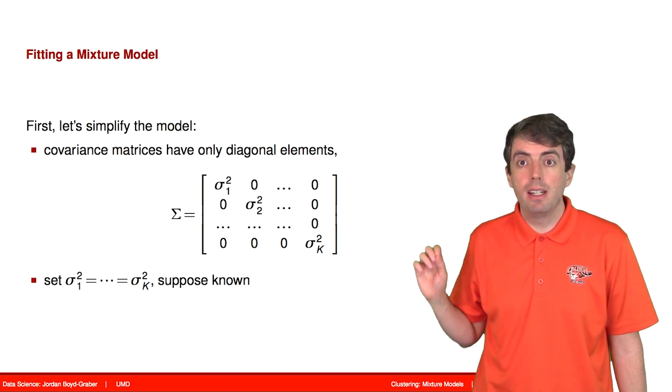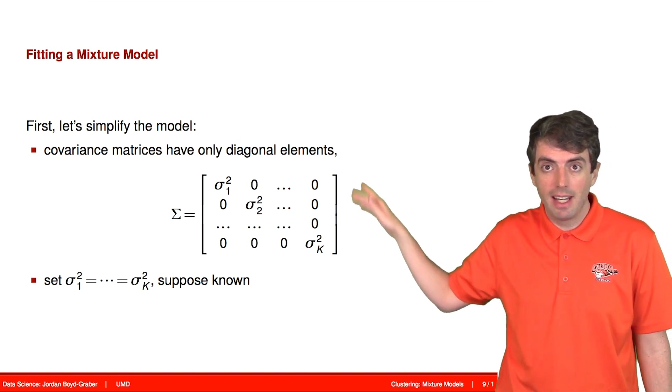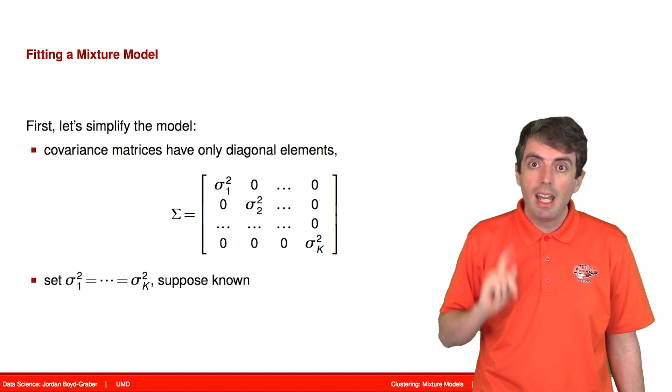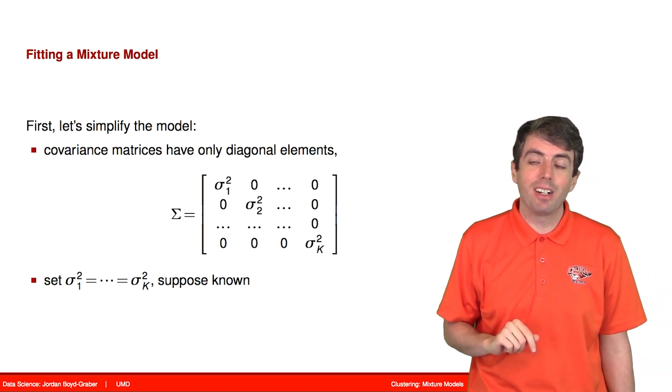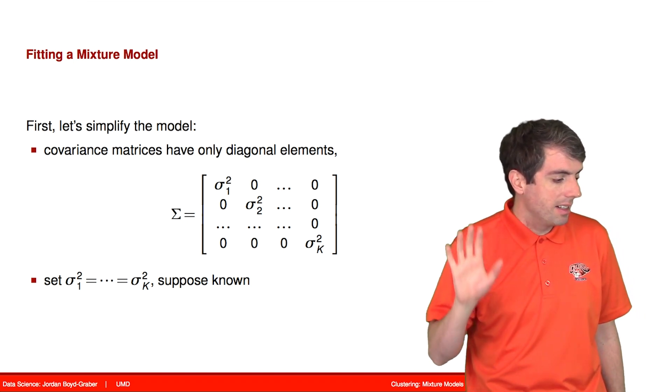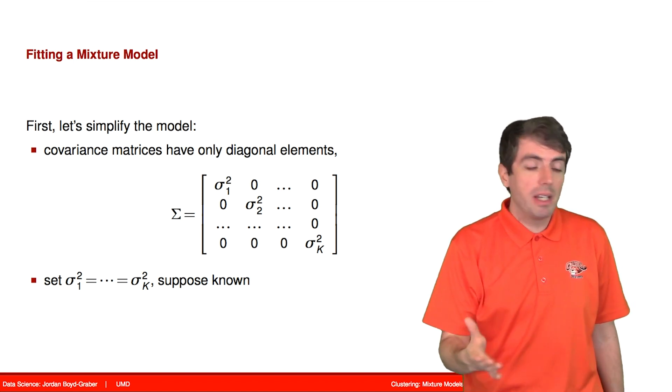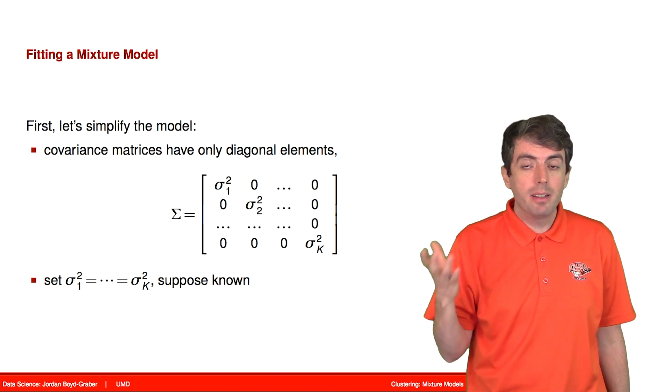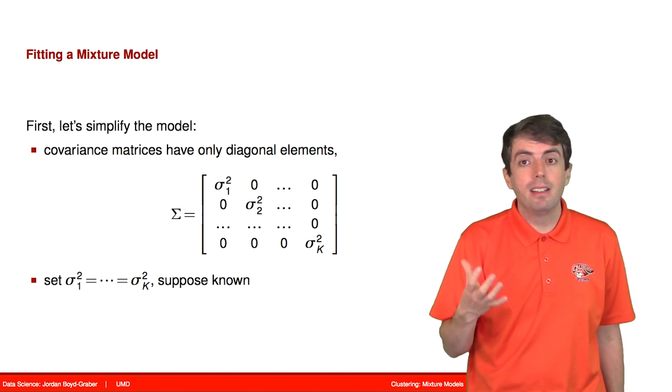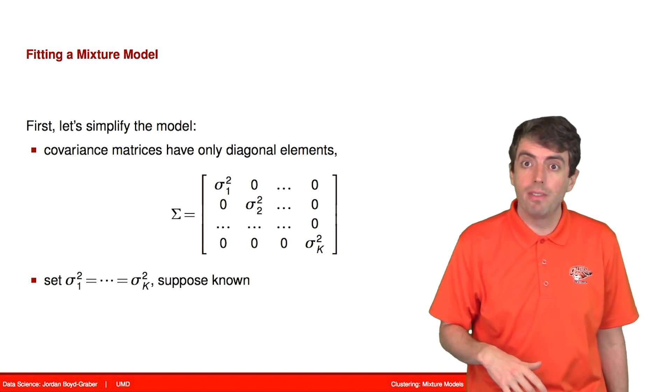That is, everything except the diagonal is zero, and we're also going to assume that all of the variances are the same. They're the same number. And we also know what that number is. And so this makes a problem very simple. And this makes it a lot like k-means. All that we've done is, instead of using a simple distance function, we're now going to use a Gaussian distribution, which turns out to be very, very similar.